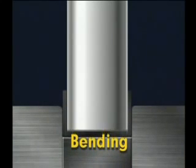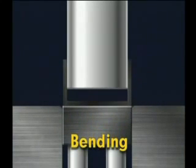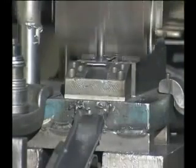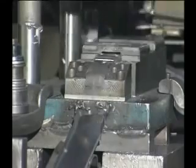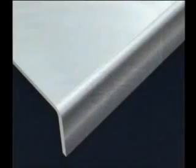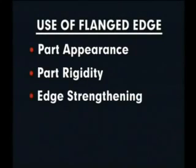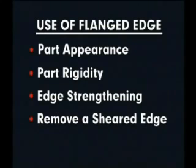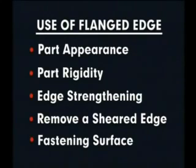Bending is performed on sheet metal to gain rigidity and to produce a part of desired shape, and is usually done to make structural stampings such as brackets, braces, and supports. Flanging is a forming operation similar to bending except that the flanged edge is shorter and narrower compared to the overall part size. A flange can be bent down along a straight or curved line and is used for appearance, rigidity, edge strengthening, removing a sheared edge, and to provide an accurately positioned fastening surface.